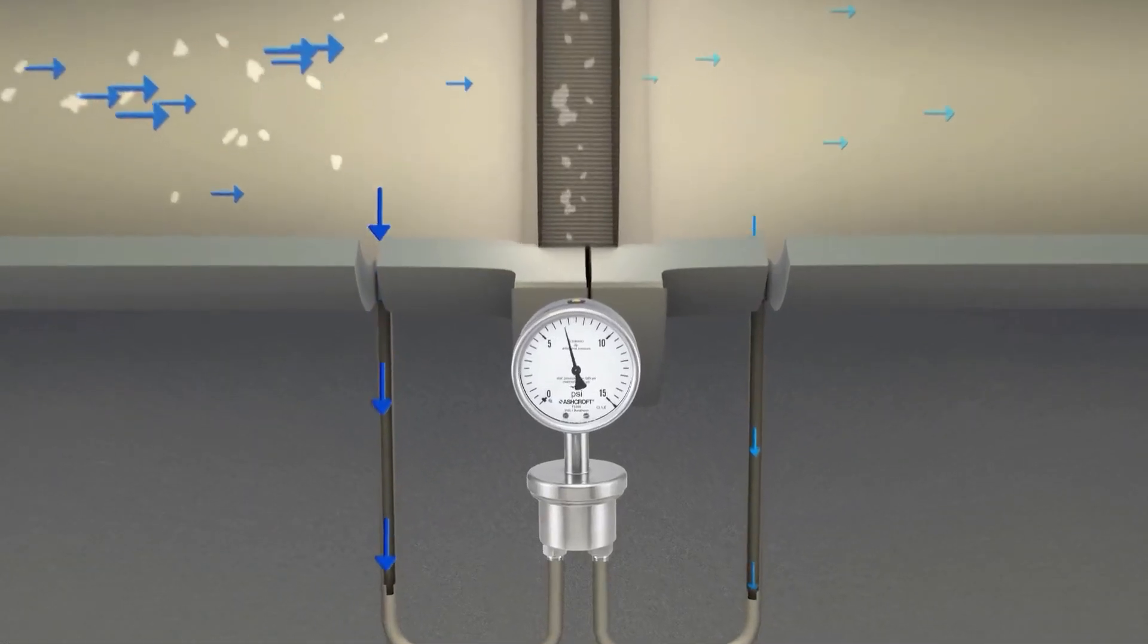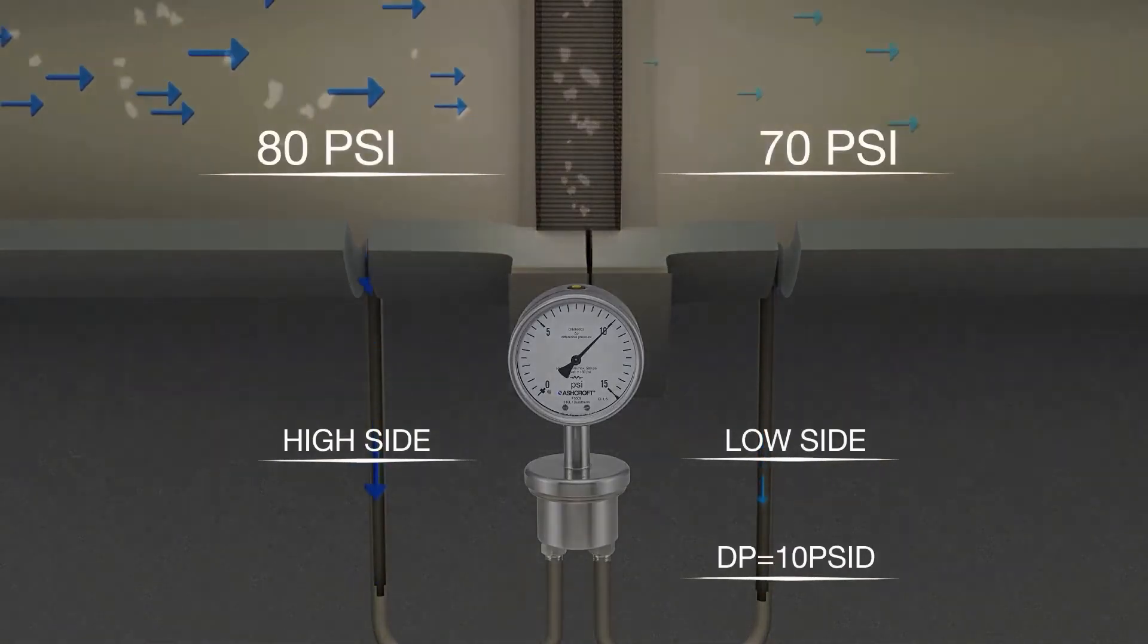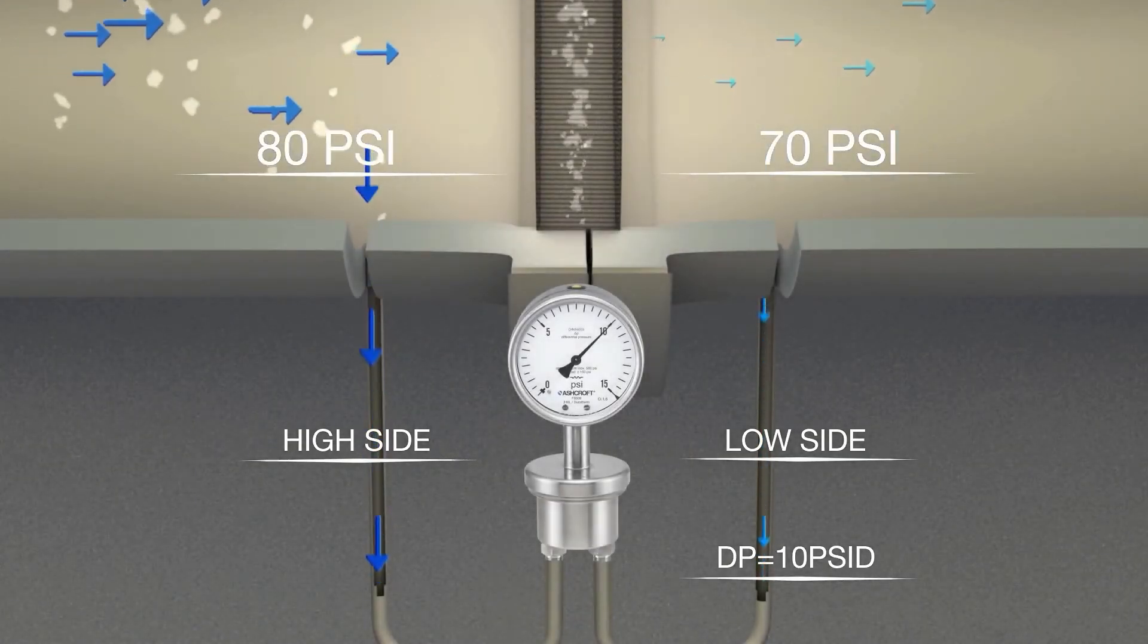Differential pressure is measured by placing taps both before and after the filter. A differential pressure measuring instrument can be connected to detect the high side and low side pressures. The instrument will report the difference between the two sides. The saturation point will be indicated when the delta P value reaches a predetermined threshold.